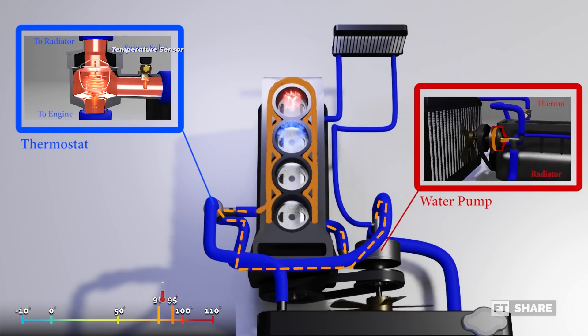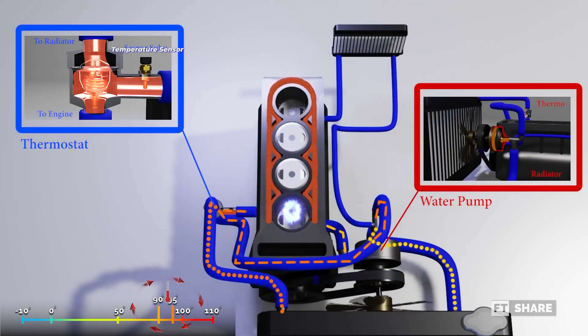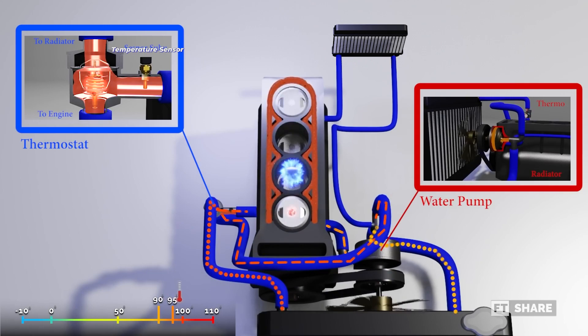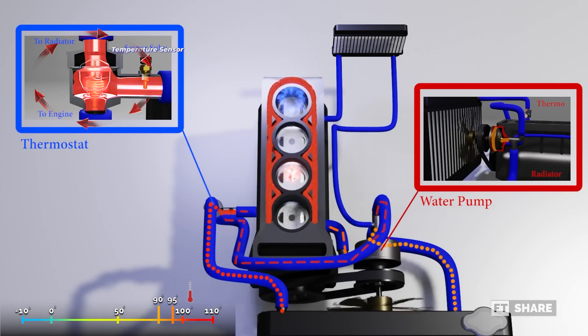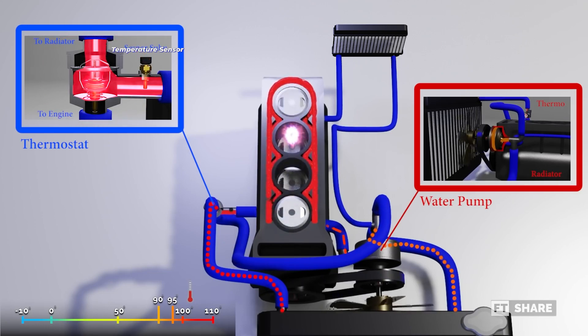To maintain the engine's optimal operating temperature, this condition will continue until the engine temperature exceeds the average operating temperature. To overcome this rising temperature, the thermostat will open the path to the radiator to cool down or lower the temperature of the hot coolant.